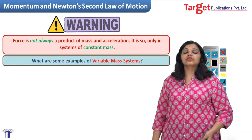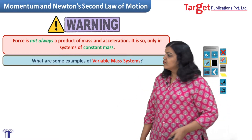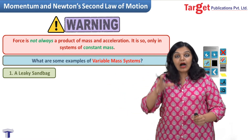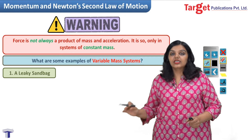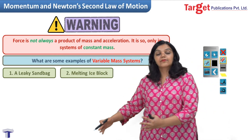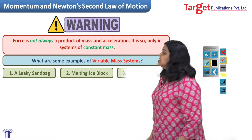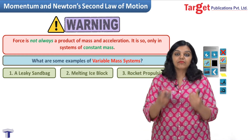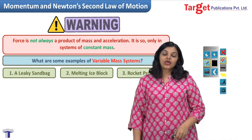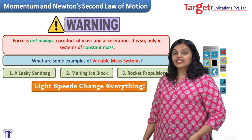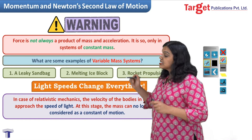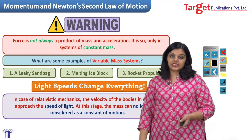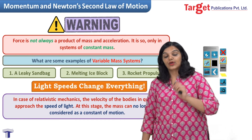What are examples of variable mass systems? First, a leaky sandbag: a bag filled with sand is moving but has a hole, so sand keeps falling and mass decreases. Second, a melting ice block, where mass constantly decreases. Third — and most importantly — rocket propulsion, where the fuel burned is so significant it constitutes a change in mass. Additionally, in relativistic mechanics, where objects approach the speed of light, mass is no longer constant. F = ma is a very special case of Newton's second law.